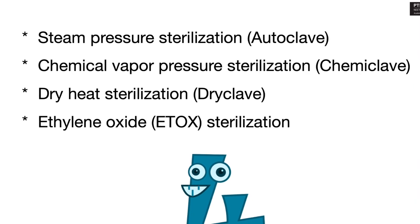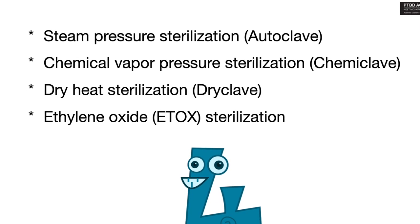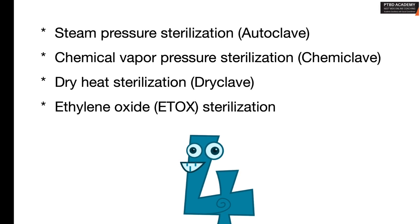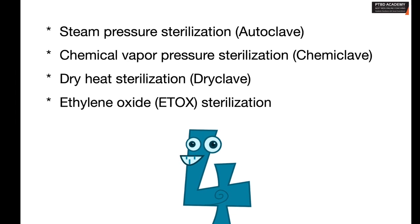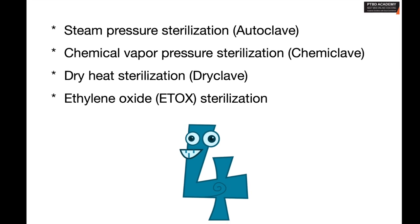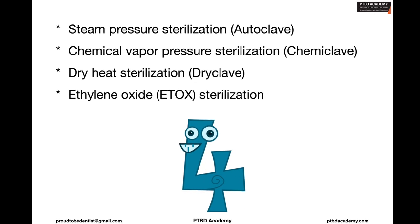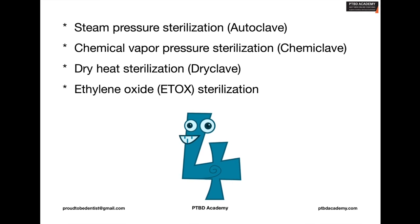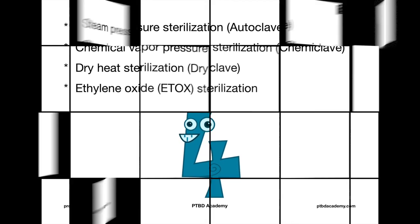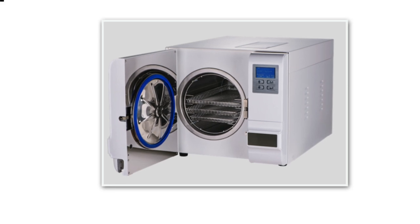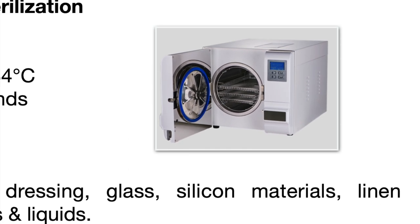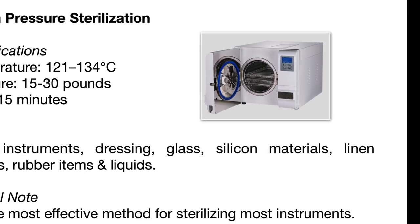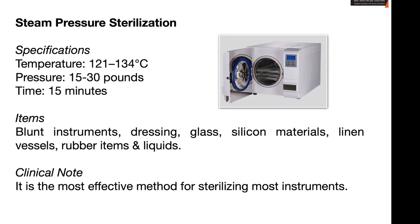There are various accepted methods of sterilization including: steam pressure sterilization or autoclave, chemical vapor pressure sterilization or chemiclave, dry heat sterilization or dry glyclave, and finally ethylene oxide sterilization or EtOx. Now let's look into each of these methods. First and foremost, steam pressure sterilization — this is a technique operated at a temperature range of 121 to 134 degrees centigrade.